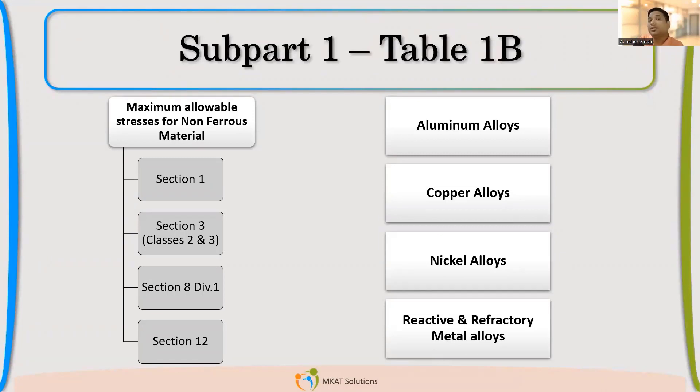Now, same 1B. So structure of all these different tables is same. You will find the type of like material name, whether it is carbon steel or alloy steel, high alloy steel. Then you will find what is the external pressure chart, CS1, CS2. What is the maximum temperature applicability for that material under the different codes, like Section 1, Section 3, Section 8. So this structure is common in each and every table. So like 1B, which is applicable for non-ferrous like aluminum, copper, nickel, refractory materials, for all these materials also the structure is completely same.